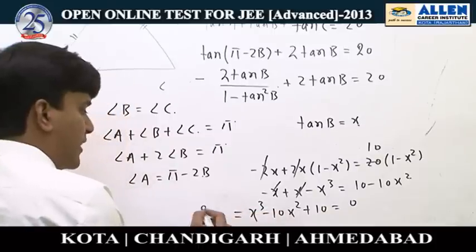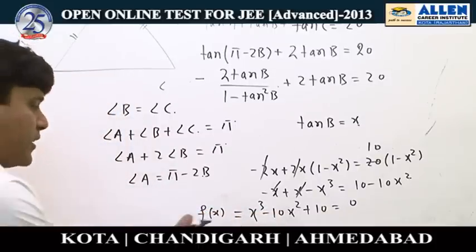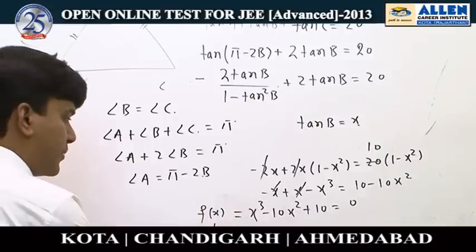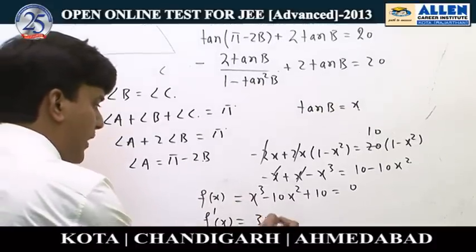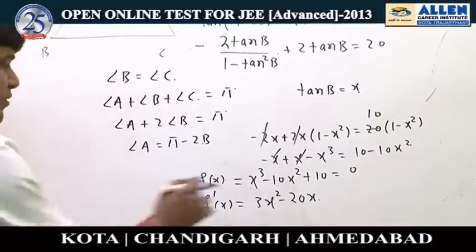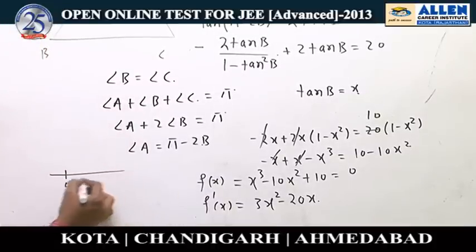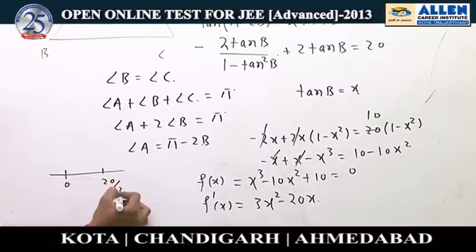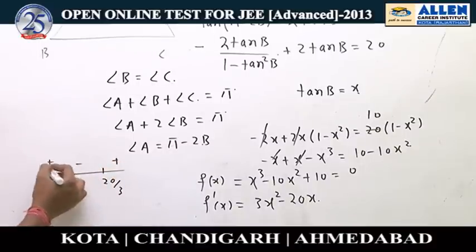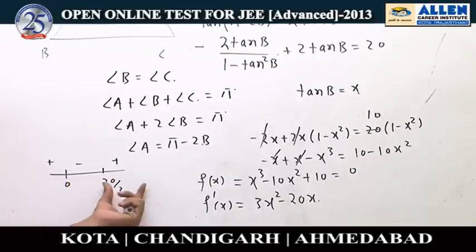Let f(x) equals x³ minus 10x² plus 10. Finding f'(x) equals 3x² minus 20x, the critical points are x equals 0 and x equals 20/3. From the sign change of f'(x), the function is increasing before 0, decreasing from 0 to 20/3, and increasing again from 20/3 to infinity.